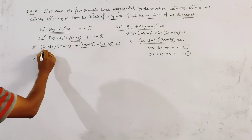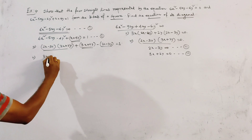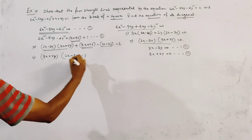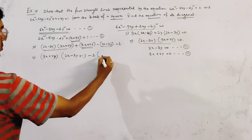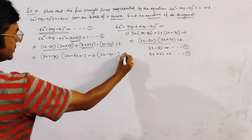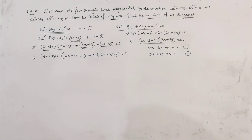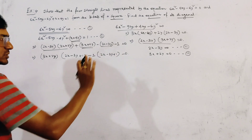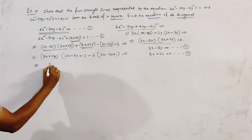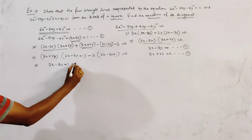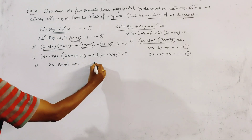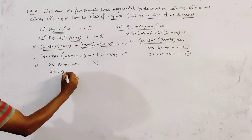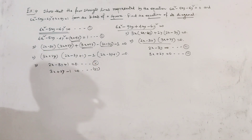Taking common factors, we get (3x + 2y)(2x - 3y + 1) - 1·(2x - 3y + 1) = 0, which gives (2x - 3y + 1)(3x + 2y - 1) = 0. Note the sign is plus, not minus, because moving 1 to the other side gives -1. Factorizing gives: line 5: 2x - 3y + 1 = 0, and line 6: 3x + 2y - 1 = 0.